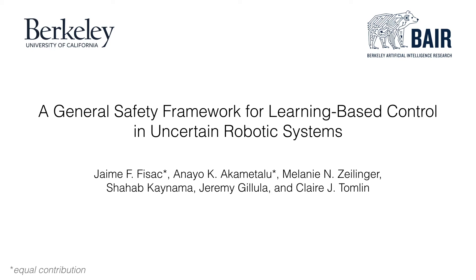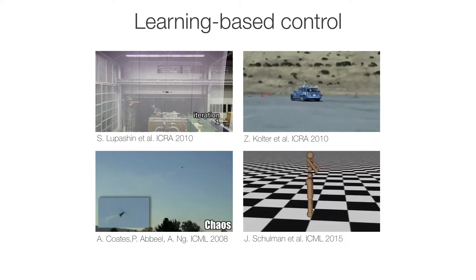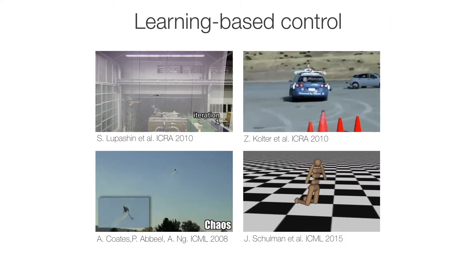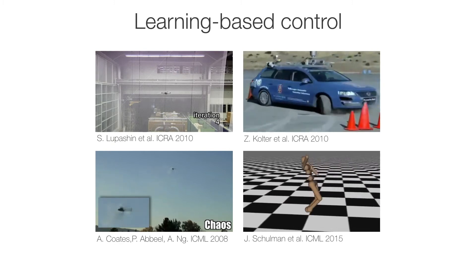This work introduces a general safety framework for learning-based control in uncertain robotic systems. Learning-based control schemes, such as reinforcement learning, are extremely attractive for robotics applications in the physical world.